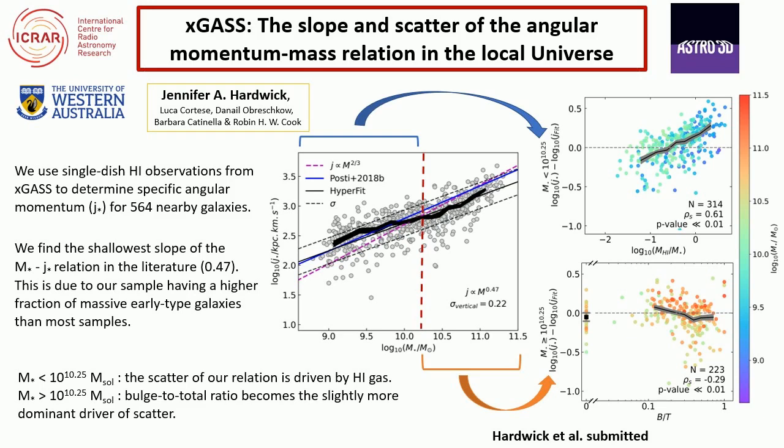We weren't only interested in the slope of our relation — we're also interested in what drives the scatter. We believe this scatter to be intrinsic and not caused by measurement error. In this work we looked at the relationship between the scatter of this relation and three parameters: bulge-to-total ratio, H1 gas fraction, and specific star formation rate. We found that what drives the scatter varied as a function of stellar mass.